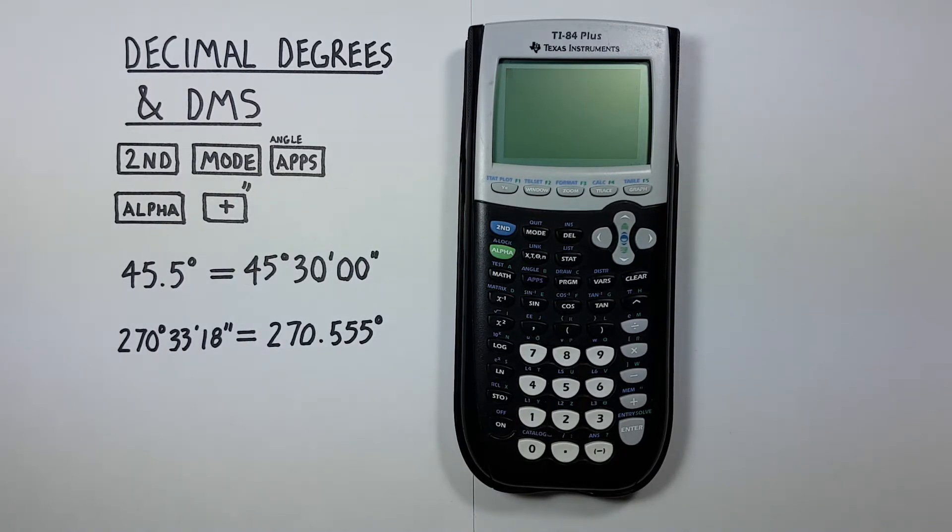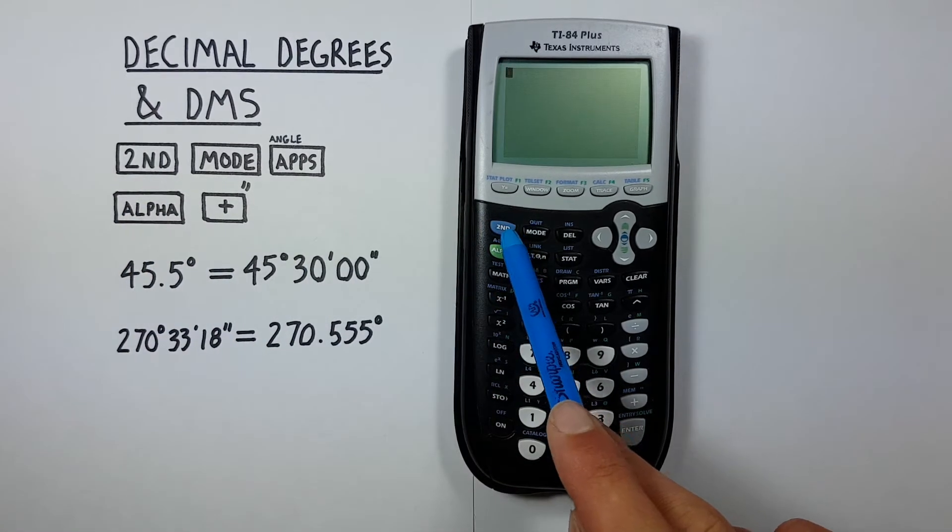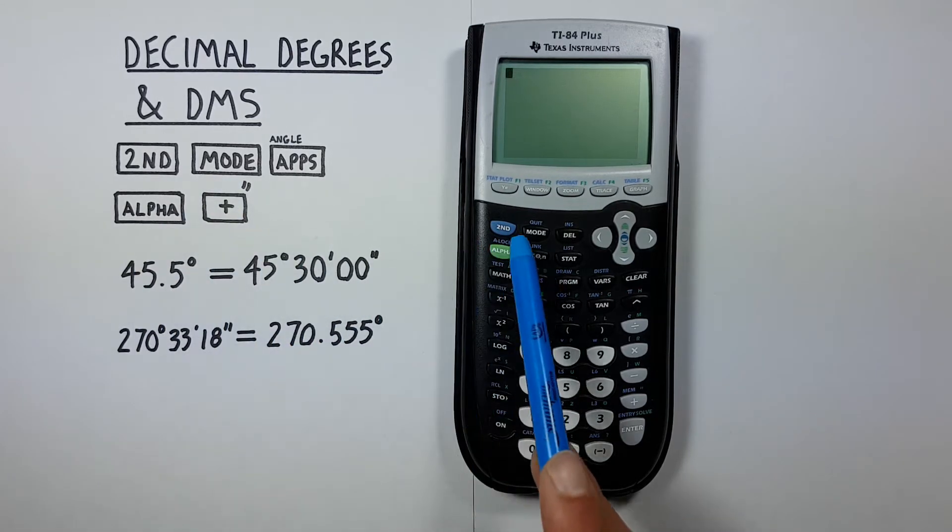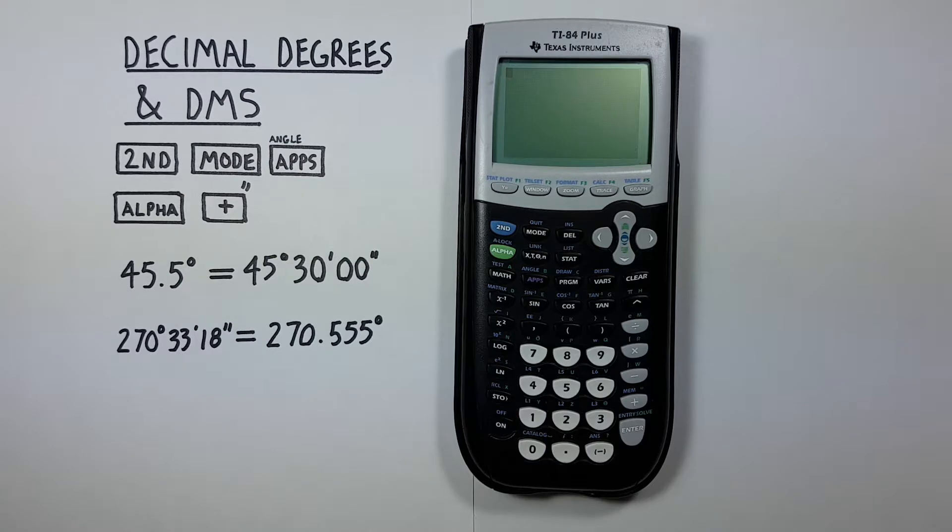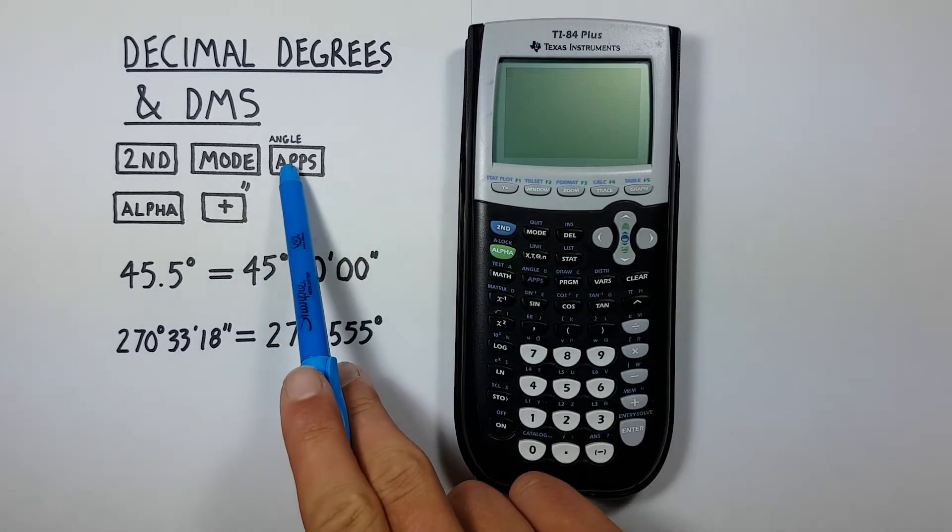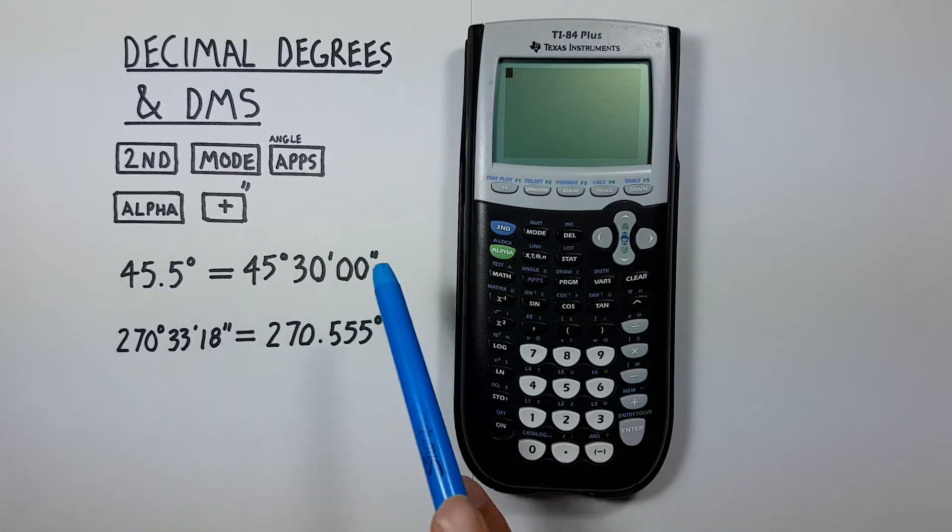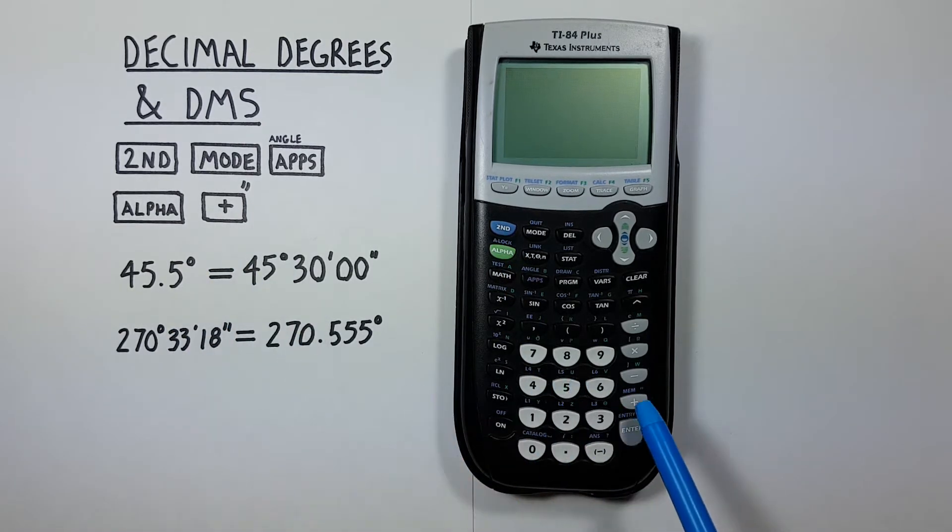To do this we'll need to use the second function key, located here. The mode key, located here. The apps key with the second function of angle, located here with the purple text. The alpha key, located here, this green one. And the plus key, located here.